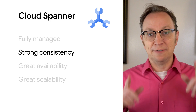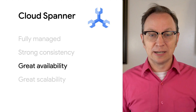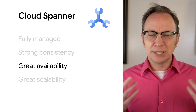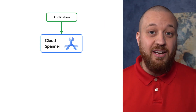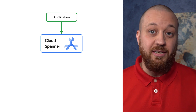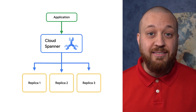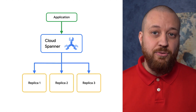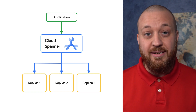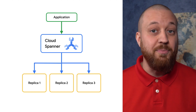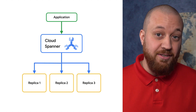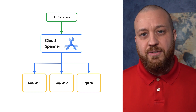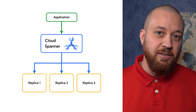And finally, you said great availability — what does that mean in this context? Spanner comes with an SLA guarantee of up to five nines of availability to ensure users have access to their data. Spanner stores multiple copies of your data in different zones or regions to handle maintenance and outages. This is transparent to your application, so your code doesn't need to know where the replicas are.